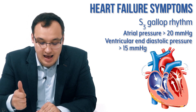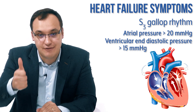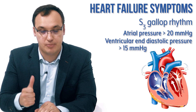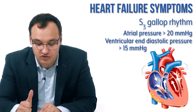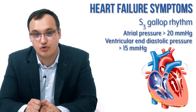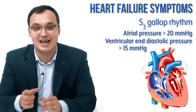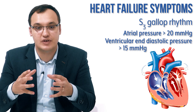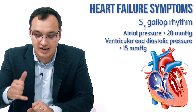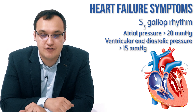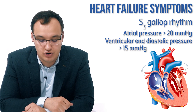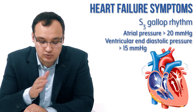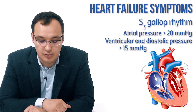If this diastolic pressure is more than 15 millimeter mercury, that can also produce gallop rhythm. So two things: high left atrial pressure of more than 20 mmHg, and high end-diastolic left ventricular pressure of more than 15 mmHg — that was S3 gallop rhythm.